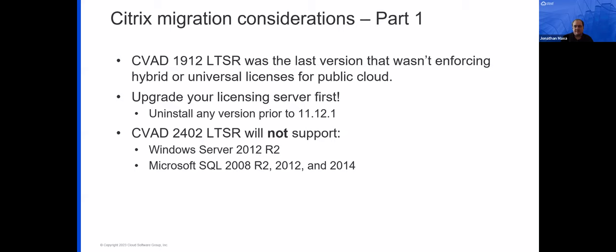For migrations: there are so many options now to take the fear out of upgrades. Be conscious that customers on CVAD 1912 — the last version that didn't enforce the hybrid or universal license for public cloud — should check their licensing. Make sure your license says Citrix Universal or DAS Hybrid Rights before upgrading past 1912. Also ensure you're on license server version 11.12.1 or later before upgrading.